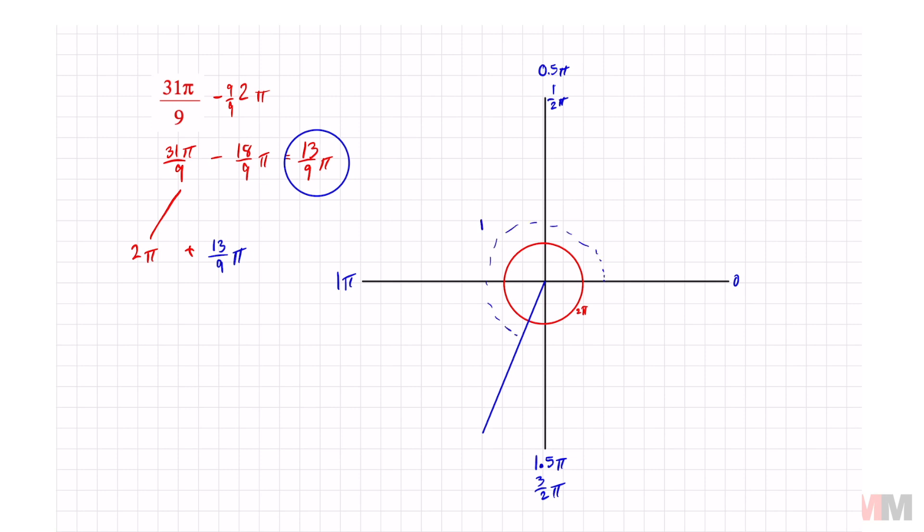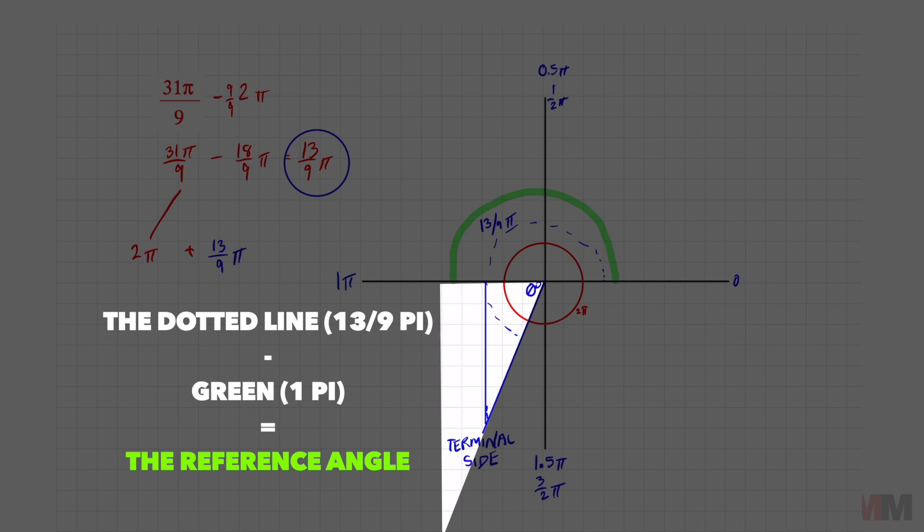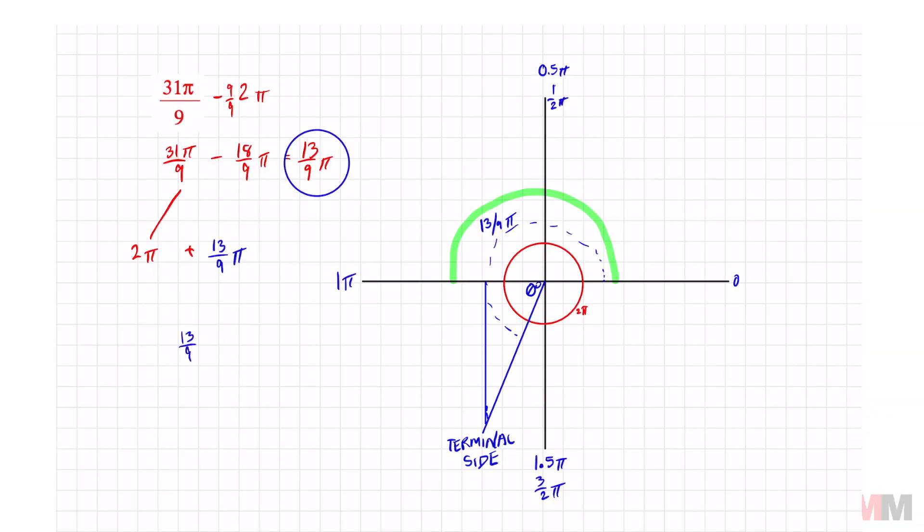From here to here is 13 over 9 π. There's my terminal side and we're trying to find the angle between the terminal side and the x-axis, which is my reference angle. Draw a line perpendicular all the way to your x-axis and we're trying to find this measurement right here. So this one's a little different. If I take that dotted line and I subtract this green part here, which is 1π, I'm going to get my reference angle. So no formulas are needed. You just have to understand this visually. So we're going to take 13 over 9 π and I subtract 1π and I will get my answer.